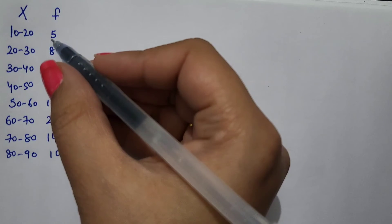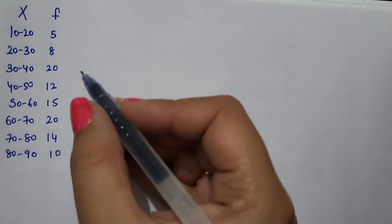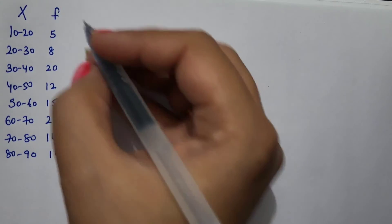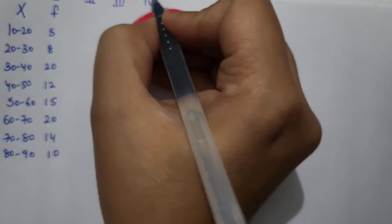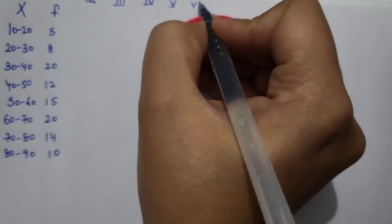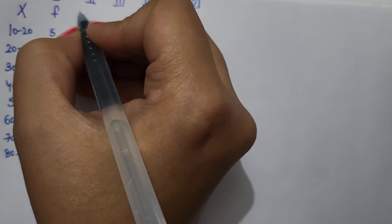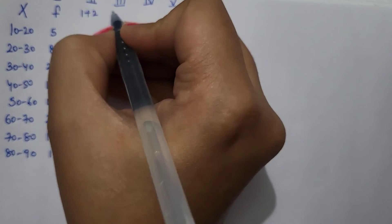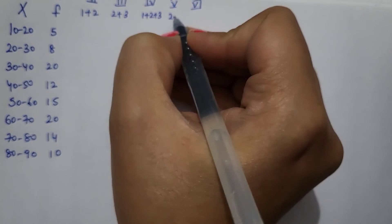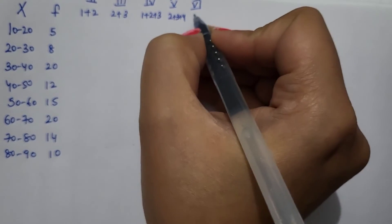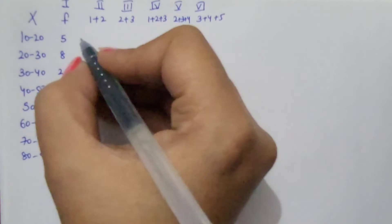Next example in continuous series, we have to calculate mode by grouping method. Again, concept is same, we need to construct 6 columns first of all, where 1 plus 2, 2 plus 3, 1, 2 and 3, 2, 3 and 4, 3, 4 and 5.